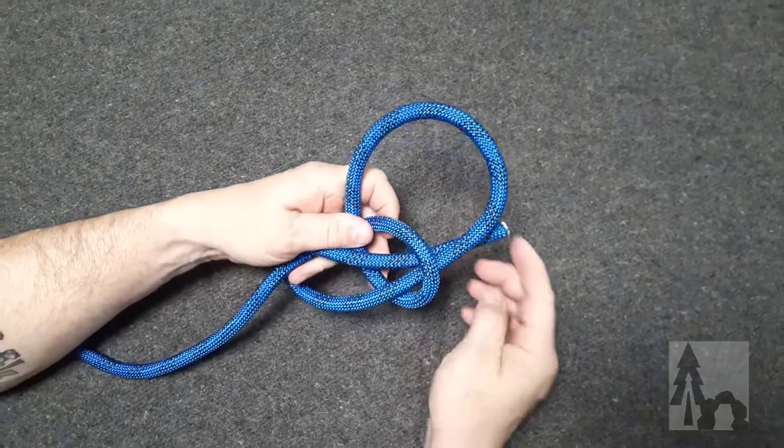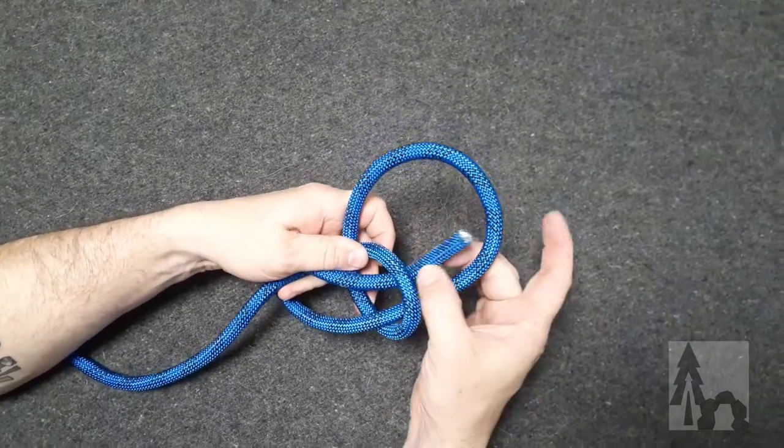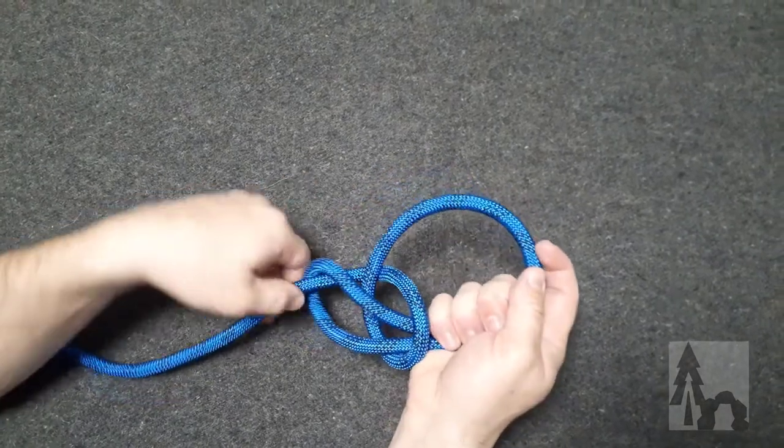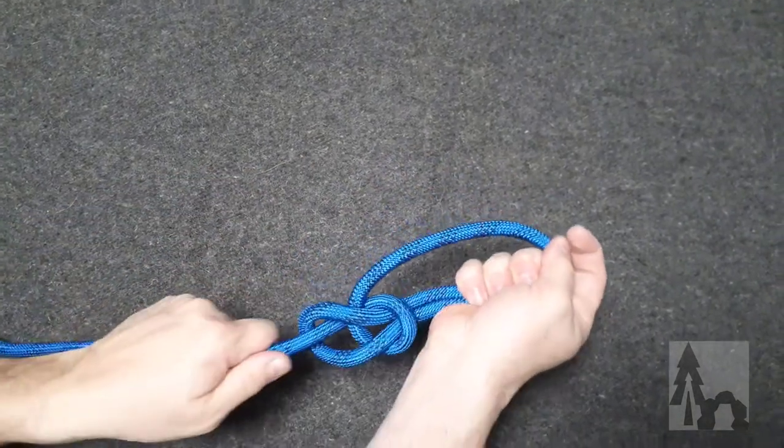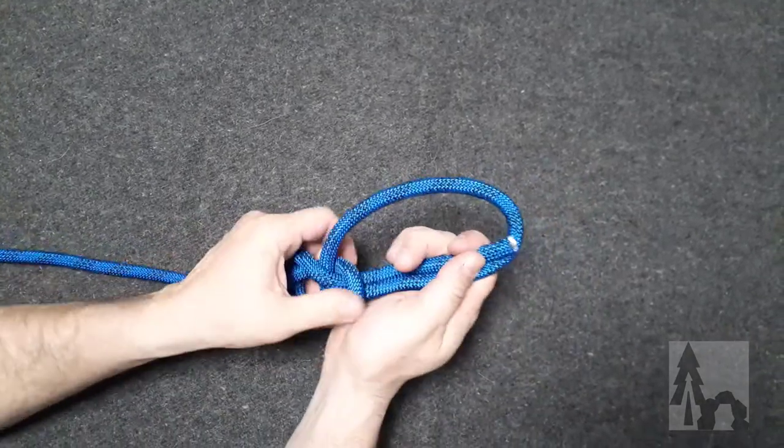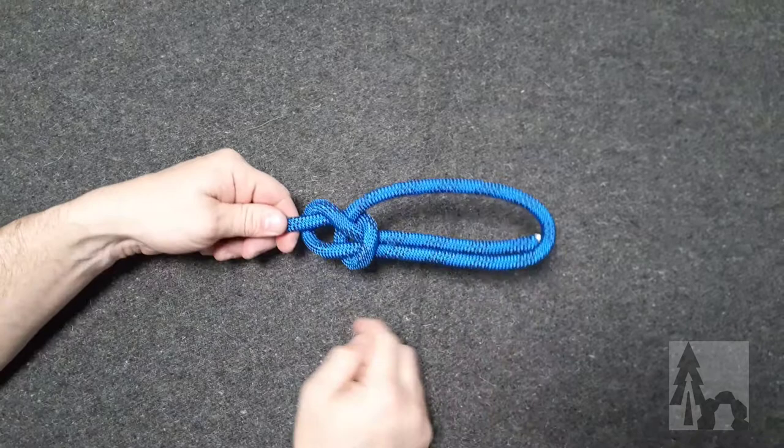Once the rabbit's back through the hole, I'm going to hold that working end, the rabbit, and his pathway in the loop. And then I pull my standing end until the knot dresses up, and I end up with my bowline loop.